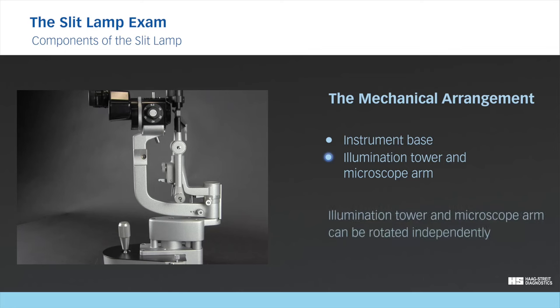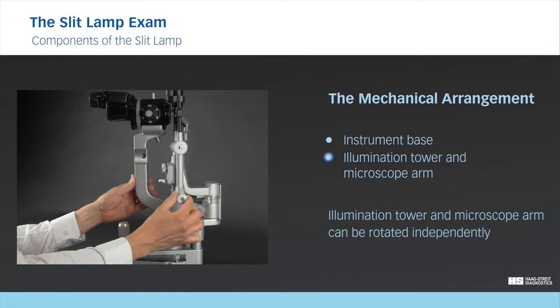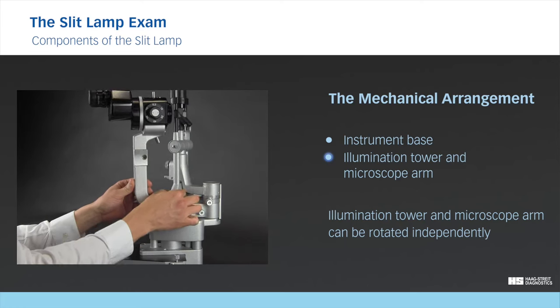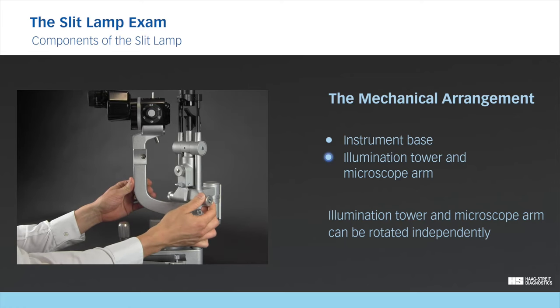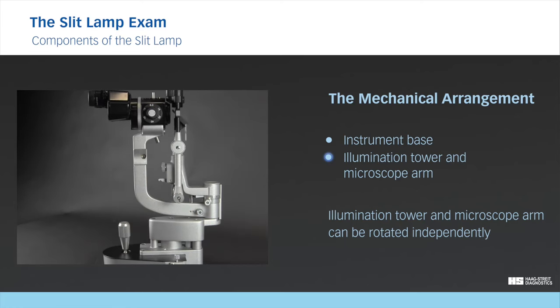During the slit lamp examination, the illumination tower and the microscope arm are moved independently of one another. The microscope arm is most frequently positioned directly in front of the eye, while the illumination tower is typically rotated to the user's left or right to illuminate the ocular structures from an angle.